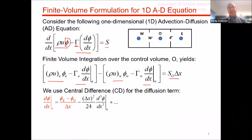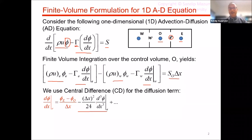For the diffusive term or the diffusive flux, we typically use central differencing, as we know from our basic study of numerical methods. So d-phi/dx on the eastern face can be written as the phi value here minus the phi value there, divided by delta x for a uniform mesh. Associated with that is a truncation error that results from the higher-order terms in the Taylor series expansion. This central difference approximation has a truncation error that is second order, as denoted by that power of 2 — grid spacing to the power 2.